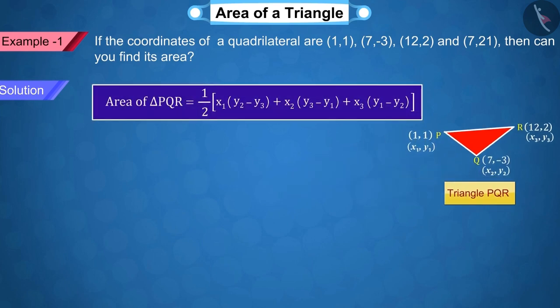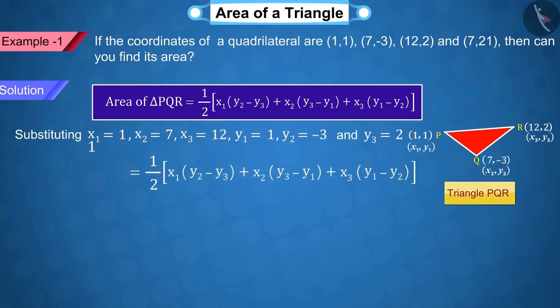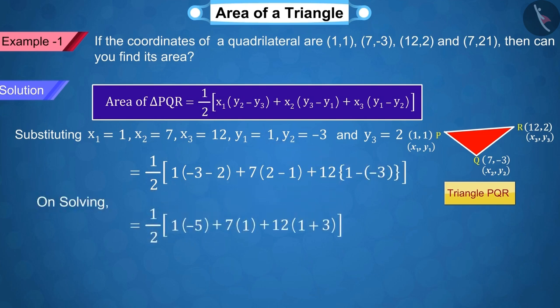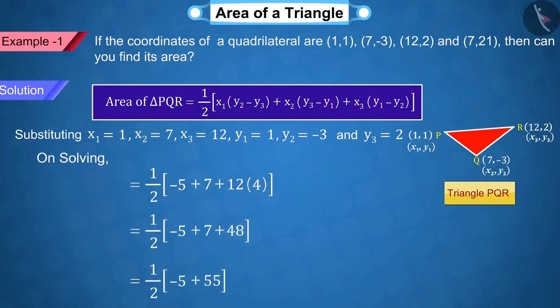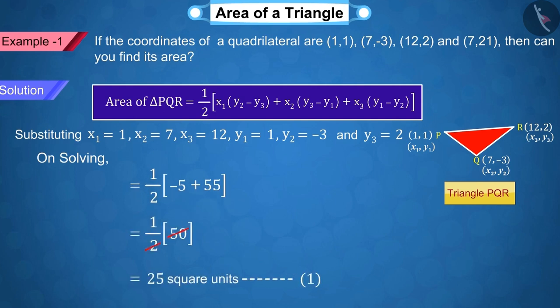In this formula, we can substitute the values of X1, Y1, X2, Y2, X3 and Y3 and solve. From which, we get the area of a triangle PQR as 25 square units.